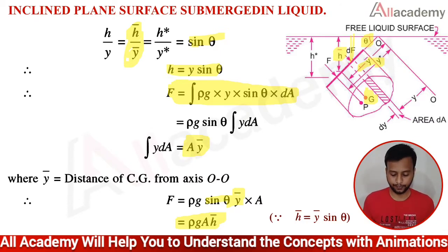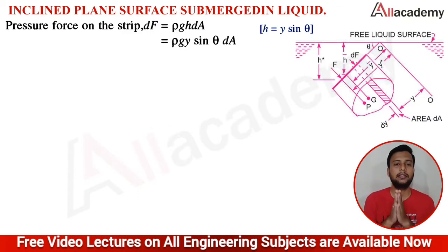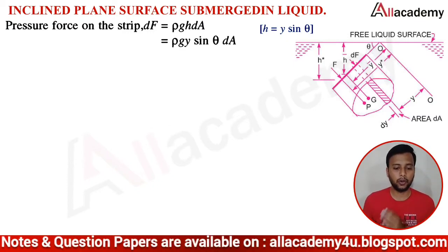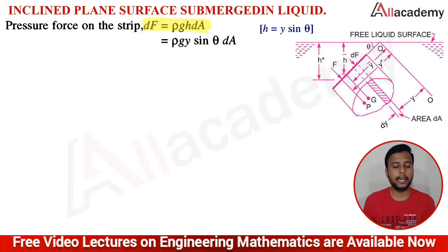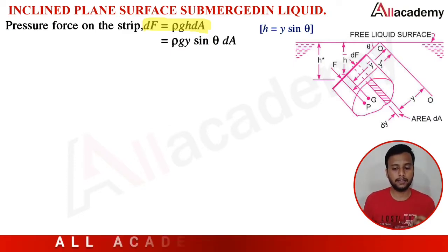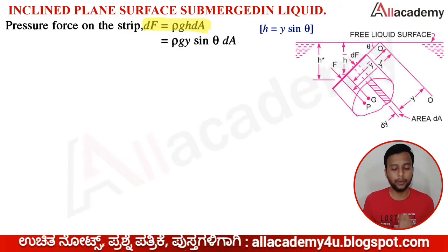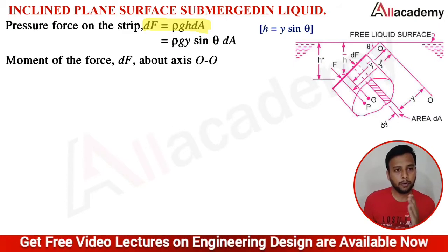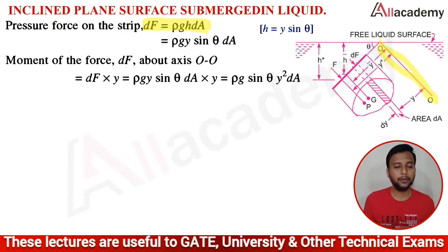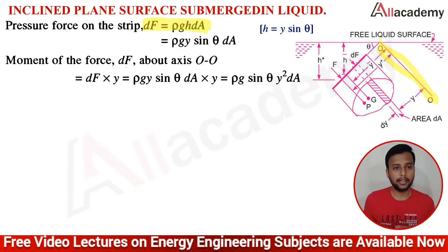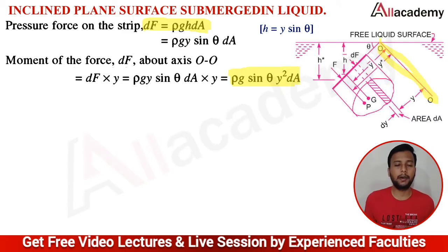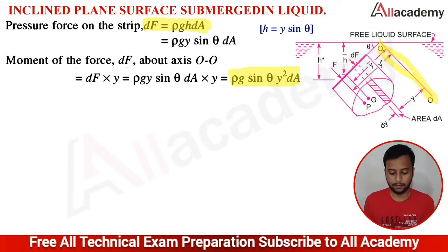Now let us find at what distance the center of pressure acts. The pressure force on the elemental strip is dF = ρgH dA, and since H = Y sin θ, we get dF = ρg Y sin θ dA. The moment of this force dF about the O-O axis is dF × Y = ρg sin θ Y² dA.